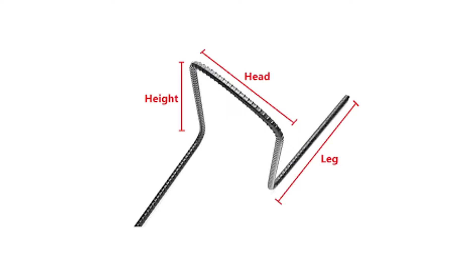Now we will discuss the parts of a chair bar. There are three main parts of a chair bar: head of chair, height of chair, and finally the leg of chair.